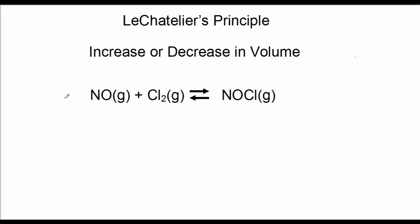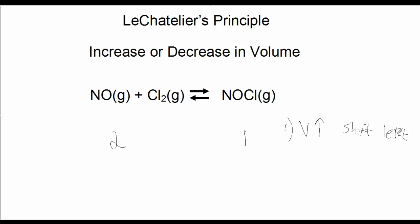Consider this reaction if we increase or decrease the volume. We look at the total number of gas molecules on either side of the chemical equation. There are two molecules on the left side and one on the right. If volume increases, meaning we have a larger space, the reaction shifts to the left. If volume decreases, we have less space for molecules, so the reaction shifts to the right.